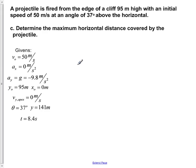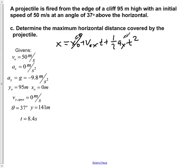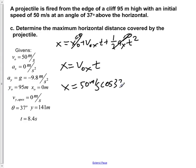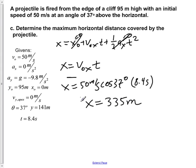Part C: determine the maximum horizontal distance covered by the projectile. Using x = x₀ + v₀x·t + ½·Ax·t², since x₀ equals 0 and Ax equals 0, this simplifies to x = v₀x·t. Substituting v₀x = 50·cos(37°) meters per second and t = 8.4 seconds gives x equal to 335 meters.